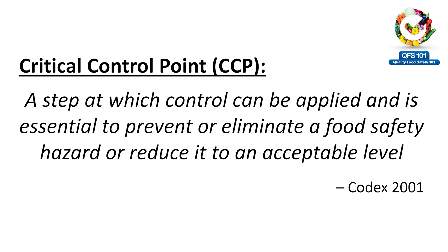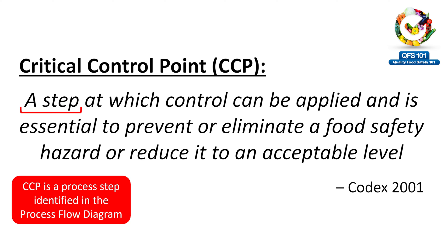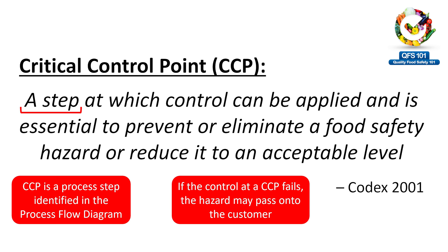First, let's talk about the definition of a CCP. A Critical Control Point is a step at which control is applied. The first part of this definition makes clear that the CCP is a process step identified in the process flow diagram. It is essential to prevent or eliminate a food safety hazard or reduce it to an acceptable level. For example, if cooking is a CCP and we don't cook food properly, the microbiological hazard can reach the consumer.